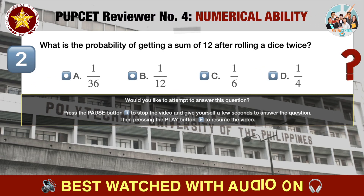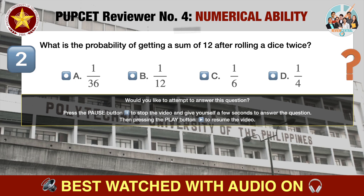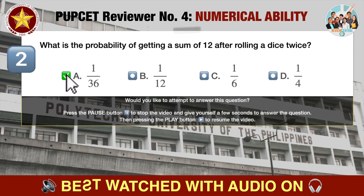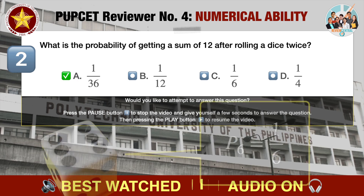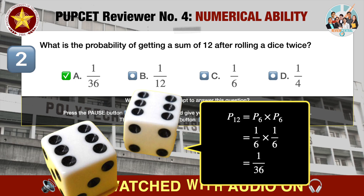Question number two: what is the probability of getting a sum of 12 after rolling a die twice? A. 1/36, B. 1/12, C. 1/6, D. 1/4. The correct answer is A, 1/36. A die has six faces numbered 1 to 6. The probability of getting a 6 when rolled is 1/6. The only way to get a sum of 12 is to roll a 6 twice. The probability of getting a 6 on both rolls is 1/6 × 1/6, therefore the answer is 1/36.